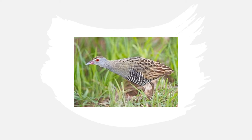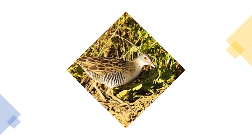The African crake is active during the day, especially at dusk, during light rain, or after heavier rain. In short grass, it can escape from a dog using its speed and maneuverability, running with the body held almost horizontal.